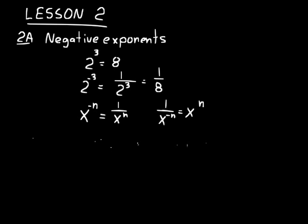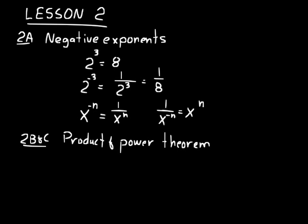Let's look at parts B and C of this lesson: the product and power theorems for exponents. The product theorem — remember that x squared times x cubed equals x to the fifth. We add exponents when we have similar bases multiplied together. Think about it: we have x times x times x times x times x, or x multiplied out five times, so that's x to the fifth. In variables: x to the m times x to the n equals x to the m plus n.